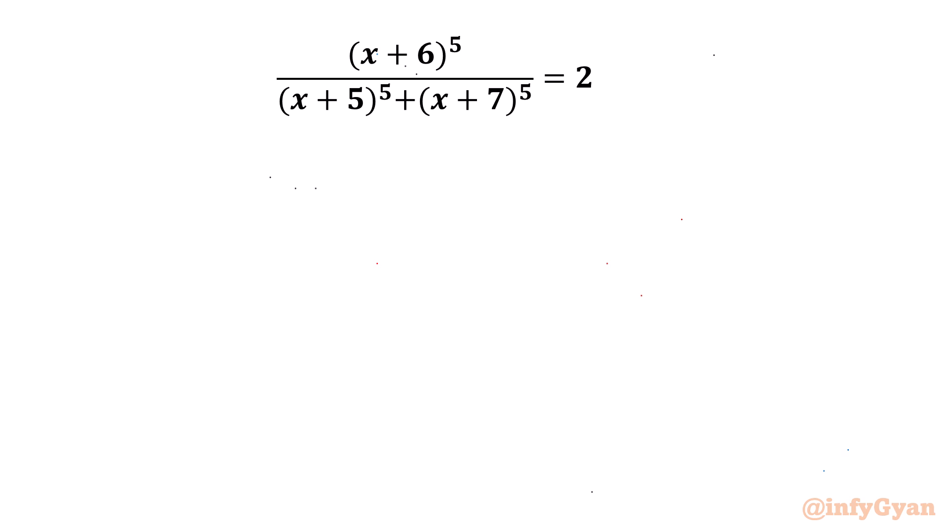Hello my dear friends, welcome back to InfiGAN. In this video we have one very interesting question from algebra. Our equation is (x+6)^5 over (x+5)^5 + (x+7)^5 equal to 2. So let us get started.